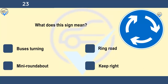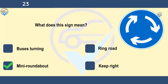What does this sign mean? Buses turning, ring road, mini roundabout, or keep right. When you see this sign, look out for any direction signs and judge whether you need to signal your intentions. Do this in good time so that other road users approaching the roundabout know what you're planning to do.